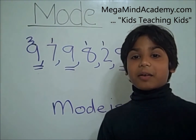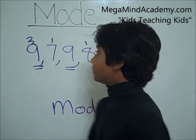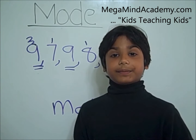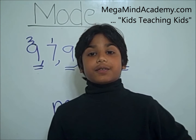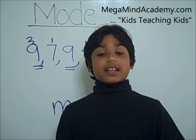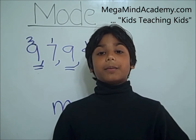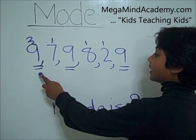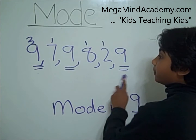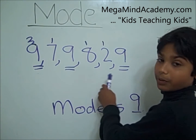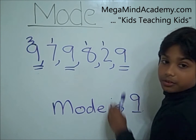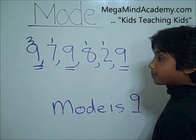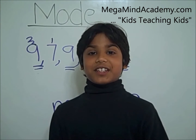Today, we learned about how to find mode with a given set of data. To find mode, you have to look for the number that occurred most often. Like 9 occurred the most often, because 9 appeared 3 times, and the rest — 7, 8, and 2 — occurred once. Thank you for watching.